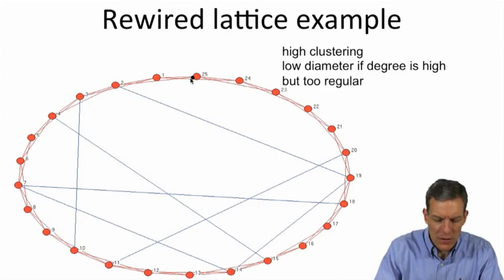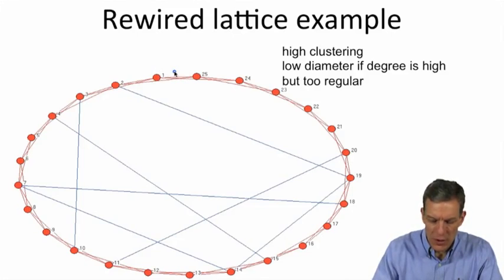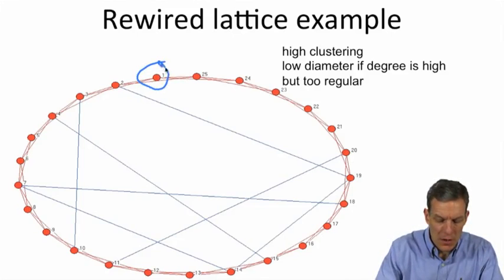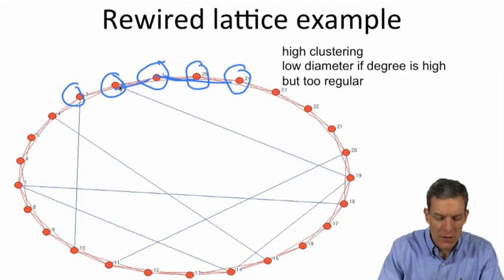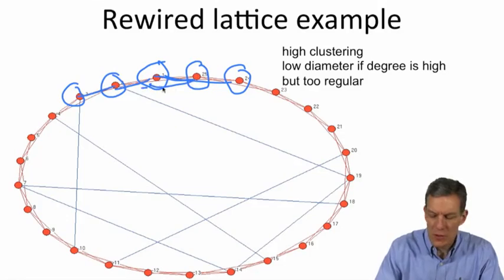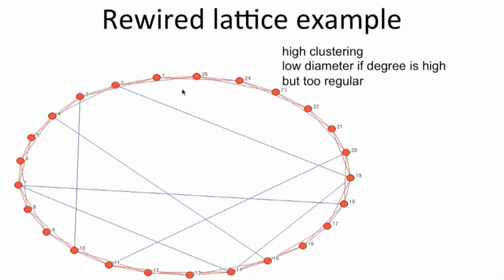Each node is connected to its two immediate neighbors. If we look here, we have node 1, and it's connected to node 2 and 3, and also connected to 25 and 24. It's got these connections going here and here. Each one of the nodes, in terms of the red, have connections to the different neighbors.